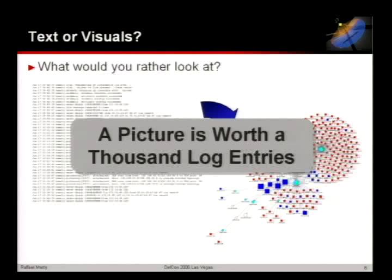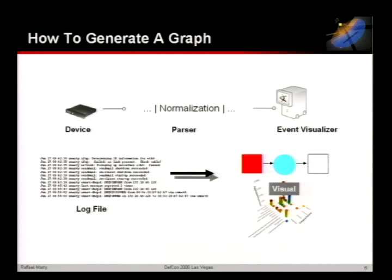So how does graphing work? There are basically two steps if you simplify it. You have a device that generates a log file or events, you record them, and you want to make a visual representation — a bar chart, a link graph, a tree map, or something. You take that log file, parse it to find source addresses, destination addresses, and ports, then throw it into an event visualizer like Afterglow to generate a graph.